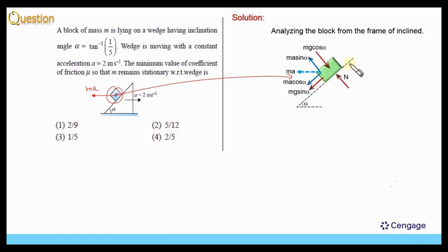This is the normal reaction. This is the friction force, which is opposing the sliding tendency of the block, which is in the downward direction. So this is our friction force, which is static in nature.